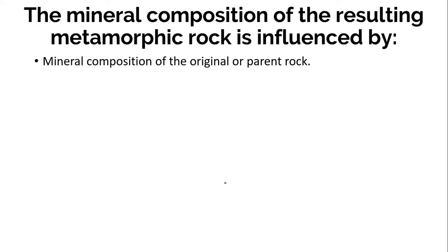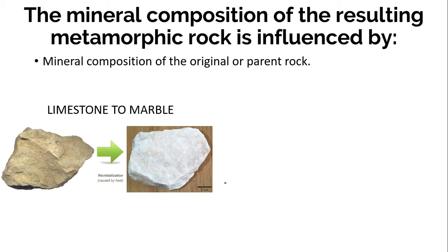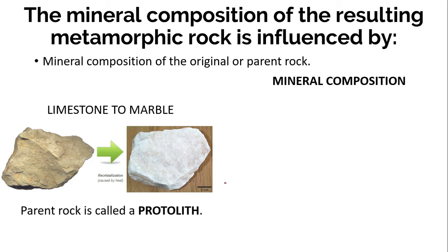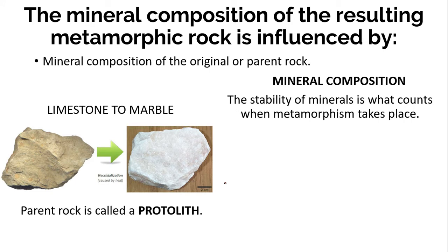The resulting metamorphic rock is clearly dependent on the parent rock. For example, marble can only be formed from the metamorphism of limestone, where heat is the main agent. No amount of metamorphism will transform shale into marble — just limestone. We call the parent rock the protolith, which is the rock that exists before metamorphism starts. The critical feature of the parent rock is its mineral composition, because the stability of minerals under changing conditions is what counts during metamorphism.